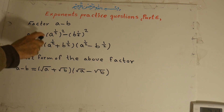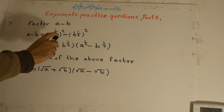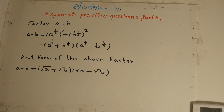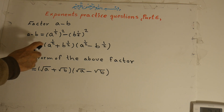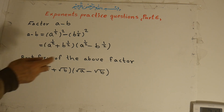So a minus b is equal to a to the power of one-half, all to the power of two, minus b to the power of one-half, all to the power of two. We can factor this into two factors according to lesson 121a: the first factor is a to the power of one-half plus b to the power of one-half, and the second factor is a to the power of one-half minus b to the power of one-half.